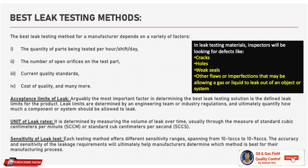The acceptance limit of leak is arguably the most important factor in determining the best leak testing solution. Leak limits are defined by an engineering team or industry regulations and ultimately quantify how much a component or system should be allowed to leak. The unit of leak rate is determined by measuring the volume of leak over time, usually through the measure of standard cubic centimeters per minute (SCCM) or standard cubic centimeters per second (SCCS). Each testing method offers different sensitivity ranges, spanning from 10⁻¹ SCCS to 10⁻⁹ SCCS. The accuracy and sensitivity of the leakage requirements will ultimately help manufacturers determine which method is best.